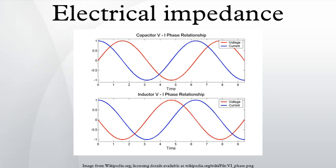Total reactance: the total reactance is given by X = X_L + X_C, so that the total impedance is Z = R + jX. Combining impedances: the total impedance of many simple networks of components can be calculated using the rules for combining impedances in series and parallel. The rules are identical to those used for combining resistances, except that the numbers in general will be complex numbers. In the general case, equivalent impedance transforms in addition to series and parallel will be required.